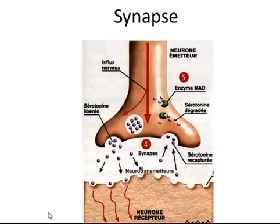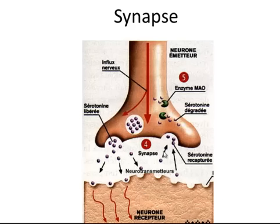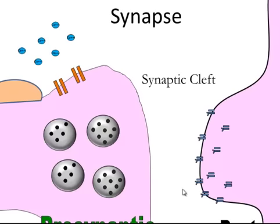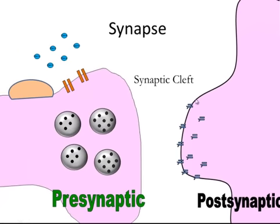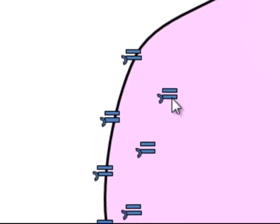What happens when the signal gets all the way down to the end? The action potential bounces all the way down to the terminal end and ultimately causes the release of neurotransmitters. The more action potentials per second, the more neurotransmitters are released — this happens at the terminal end of the axon. Between the axon and the next cell is a space called a synapse. Here's a dendrite of the other cell — a dendritic spine — and on it are chemical-gated ion channels.